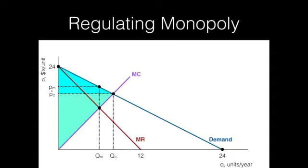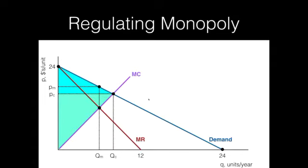A monopolist would charge PM and have an output level of QM. And if — and this is a big if — the regulators had enough information to determine demand and therefore marginal revenue, and they had information about the marginal cost for the monopolist, they could set a price cap or price ceiling equivalent to the perfectly competitive price. This is what I mean by optimal, and the assumption is that the regulator has the information to determine the perfectly competitive output level and price.